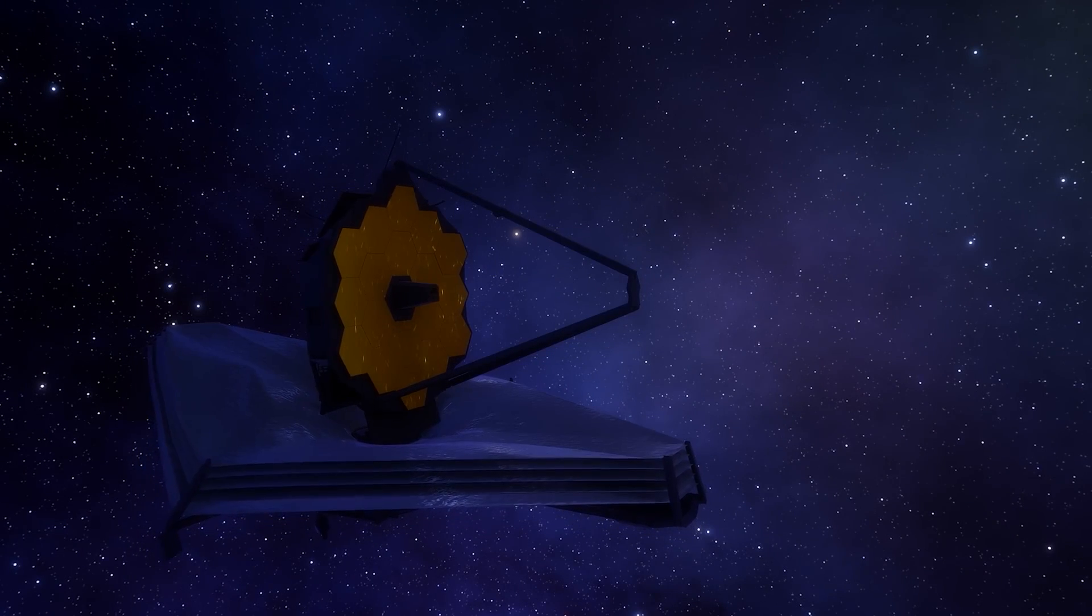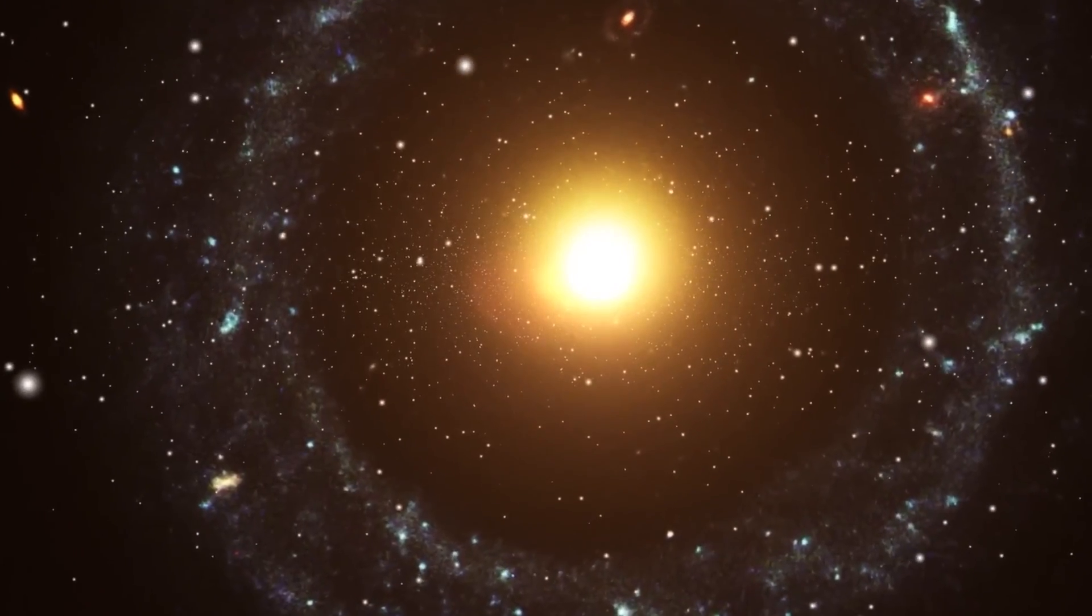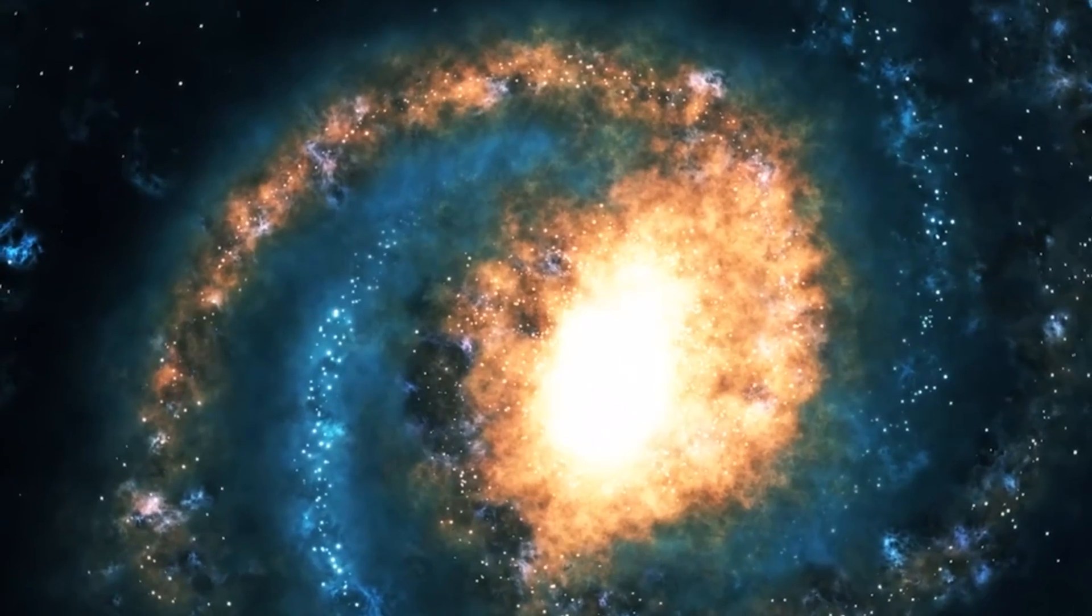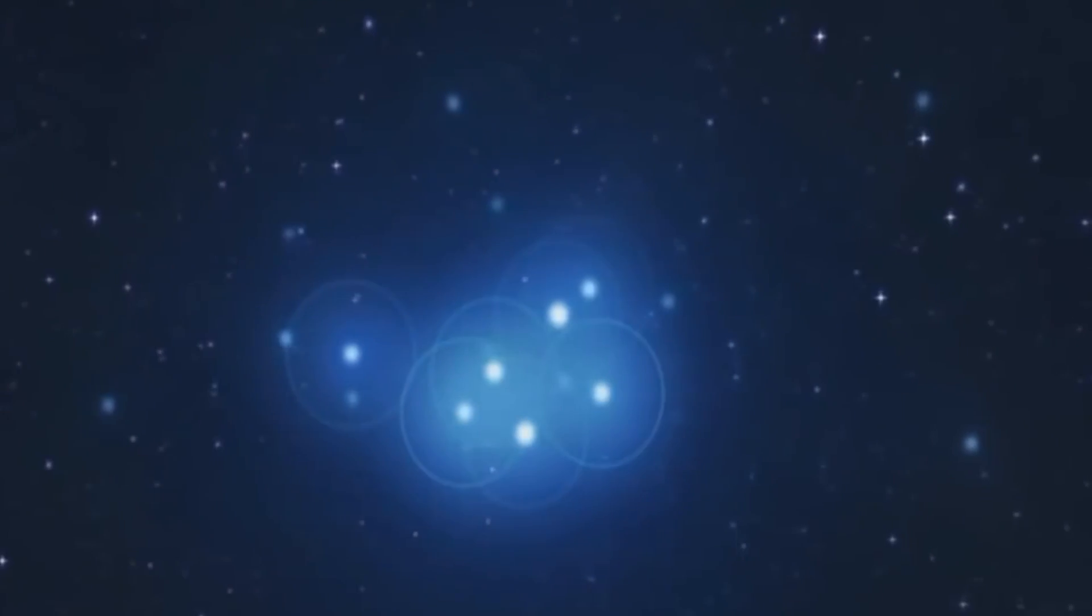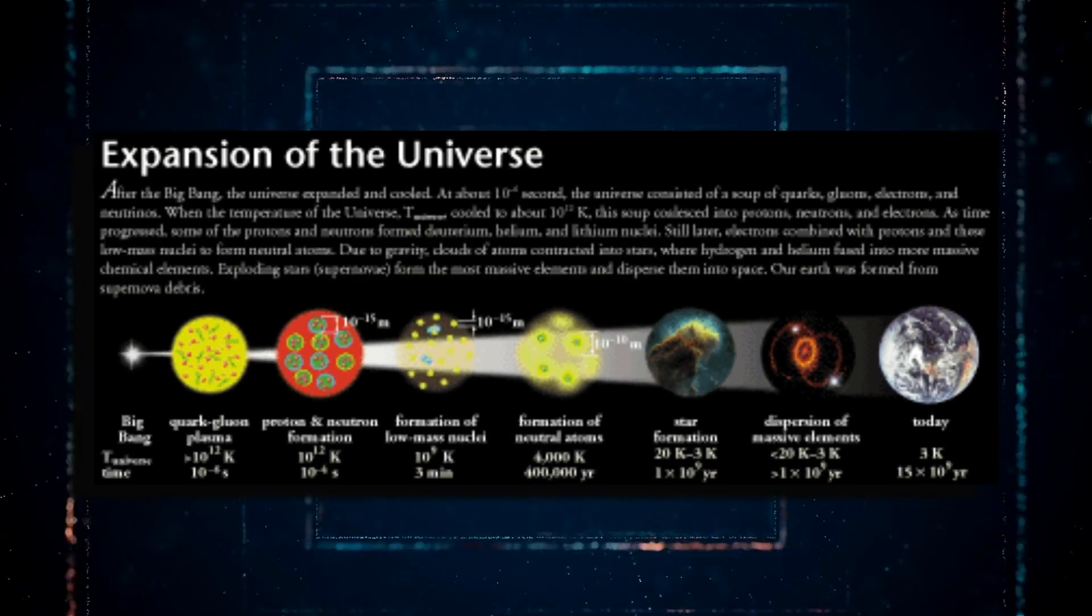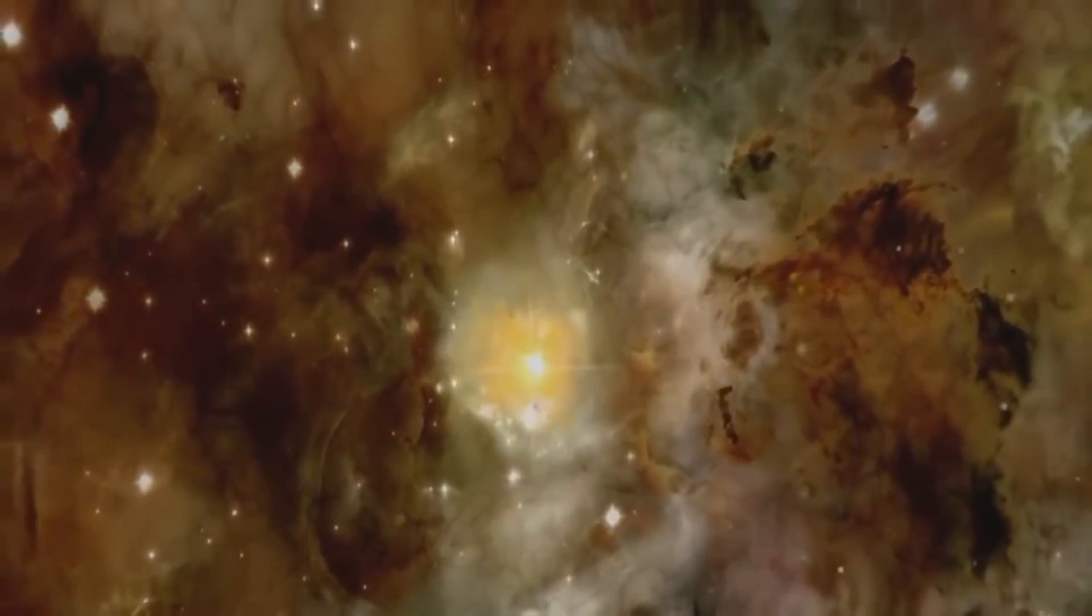According to established theories, the early universe should have been populated by small, youthful galaxies during this era. However, the newfound galaxies possess maturity and massiveness akin to our own Milky Way, presenting a perplexing enigma for scientists. The existence of such colossal galaxies in such close proximity to the Big Bang challenges the prevailing understanding of early galaxy formation. According to existing models, following a period of rapid expansion, the universe cooled down, permitting gas to coalesce and collapse, resulting in the birth of stars and galaxies during the Dark Ages.